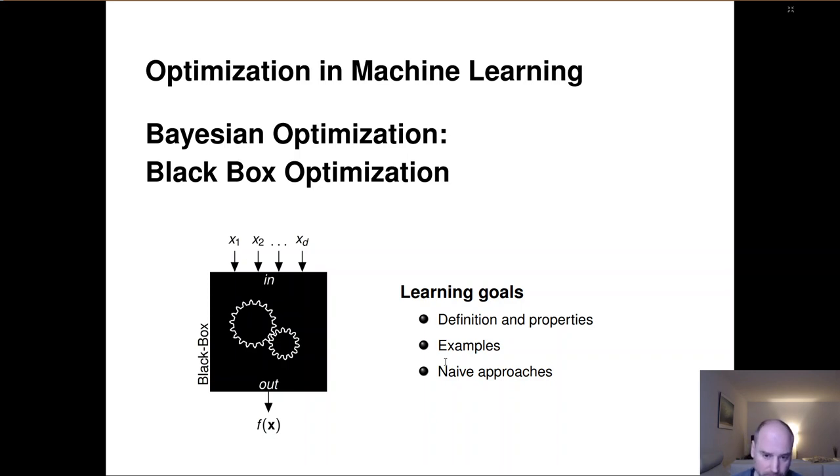We'll define what we mean by black box optimization and specifically expensive black box optimization. Give some examples and discuss a few alternative naive and not so naive approaches, criticize them, and discuss why we're actually motivated to do something that's model and machine learning based, which will then lead us to the introduction of Bayesian optimization.